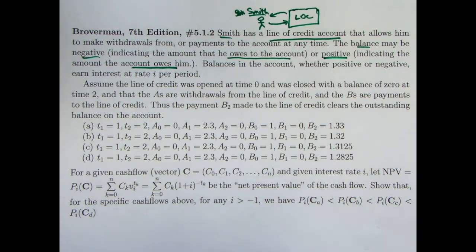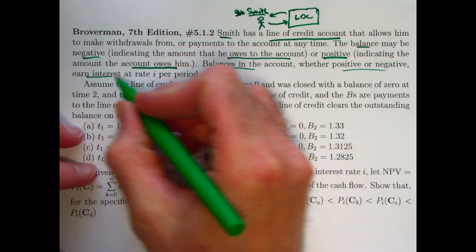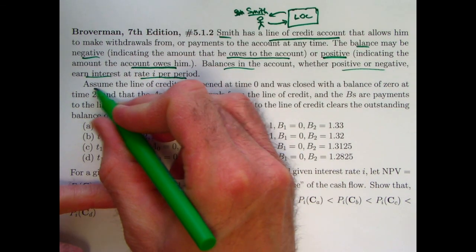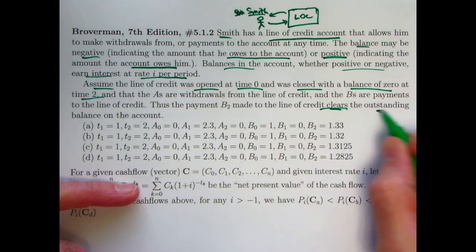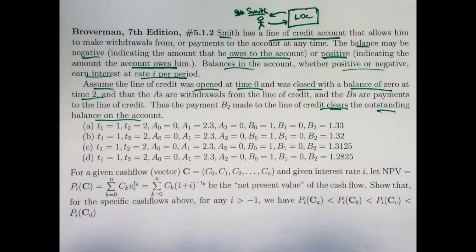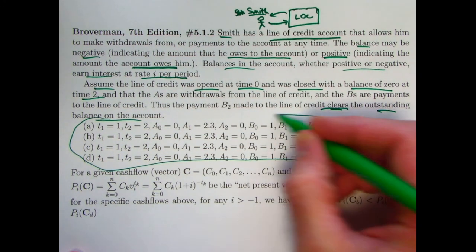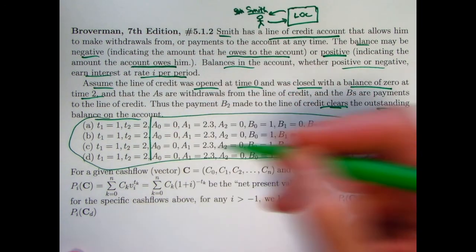This is a very conceptual question. Not really too much to do here mathematically, though I will do some math, it's really more understanding the idea of what's going on here. Balance either way, positive or negative, earned interest at a rate of i per period. Assume it's open at time zero, closed with a balance of zero at time two. He is clearing the outstanding balance at time two.